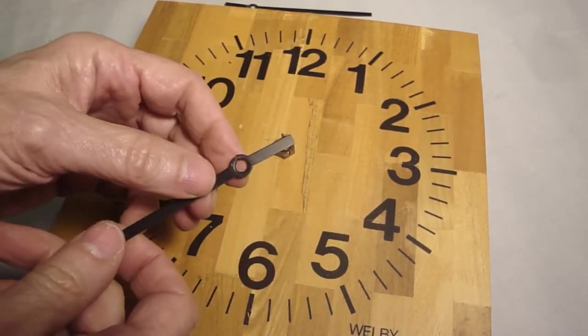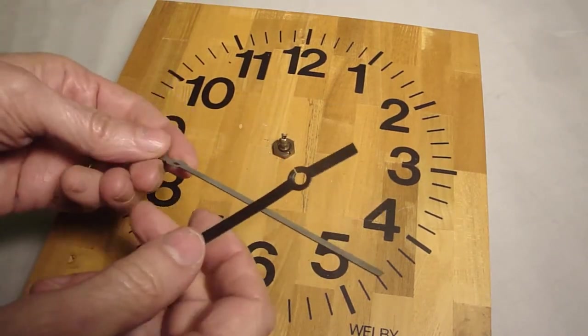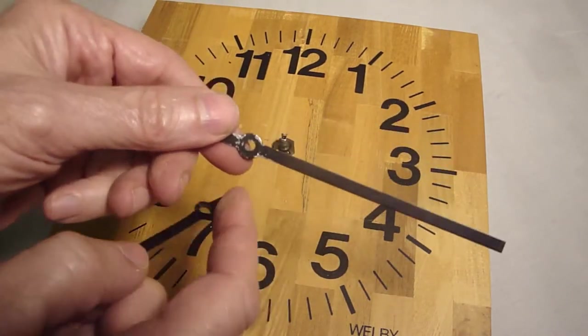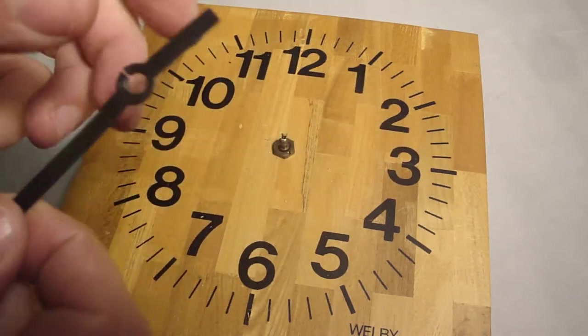I don't know if there's a standard size for these, but they're always different sizes. Usually the minute hand has a smaller diameter hole and the hour hand has a larger diameter hole.